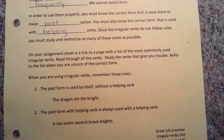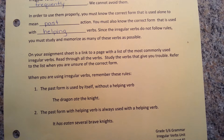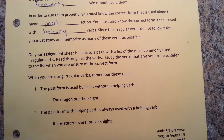When you are using irregular verbs, remember these rules. One: the past form is used by itself without a helping verb. For example, the dragon ate the knight. Number two: the past participle form with helping verbs is always used with a helping verb. For example, it has eaten several brave knights.